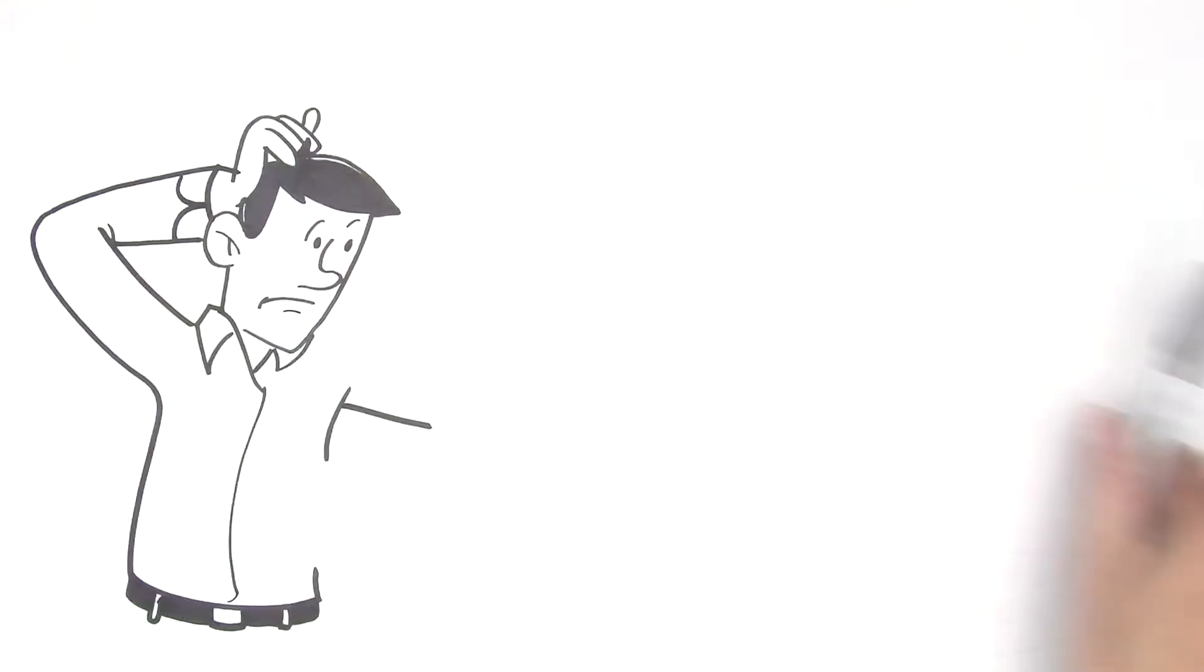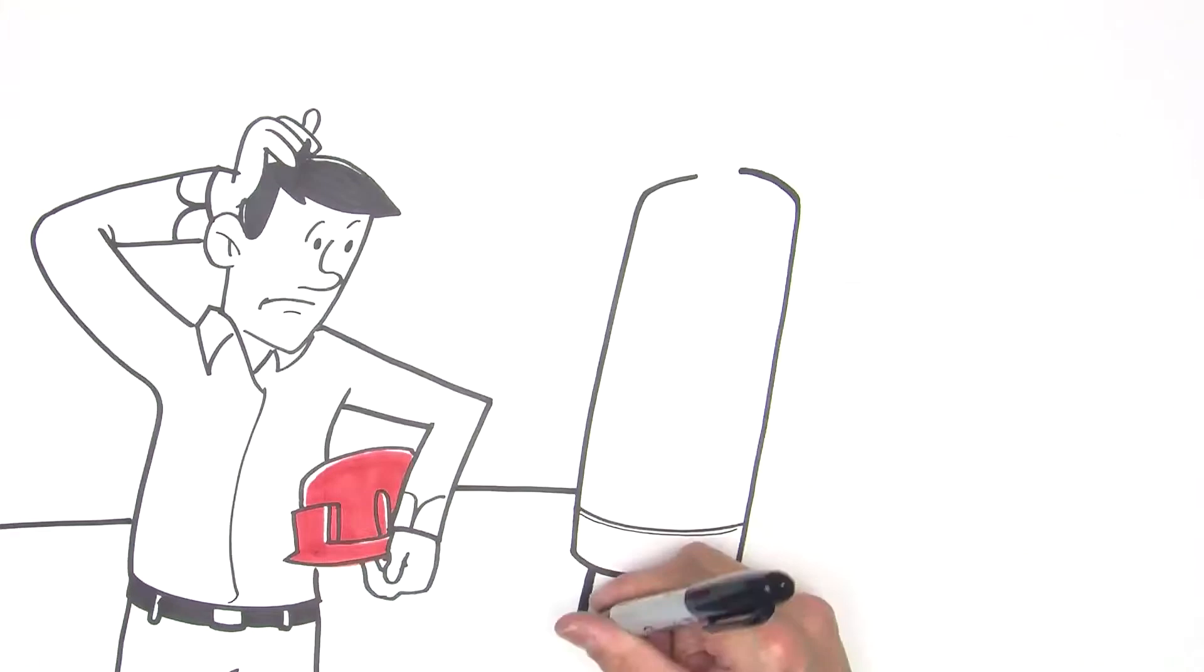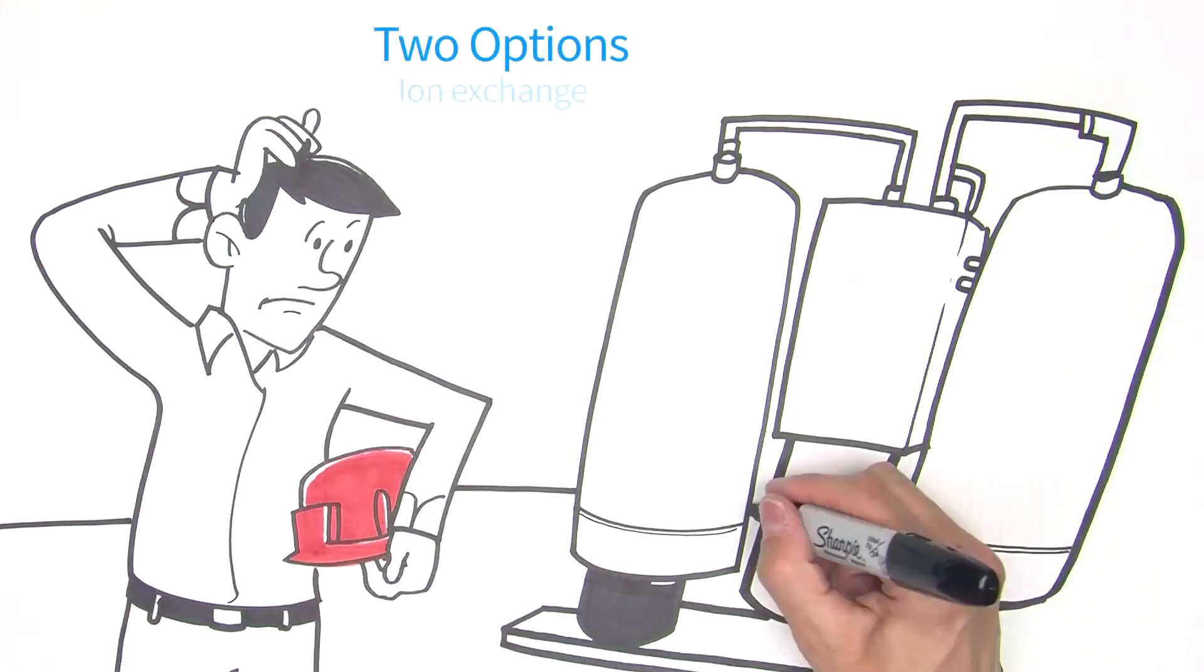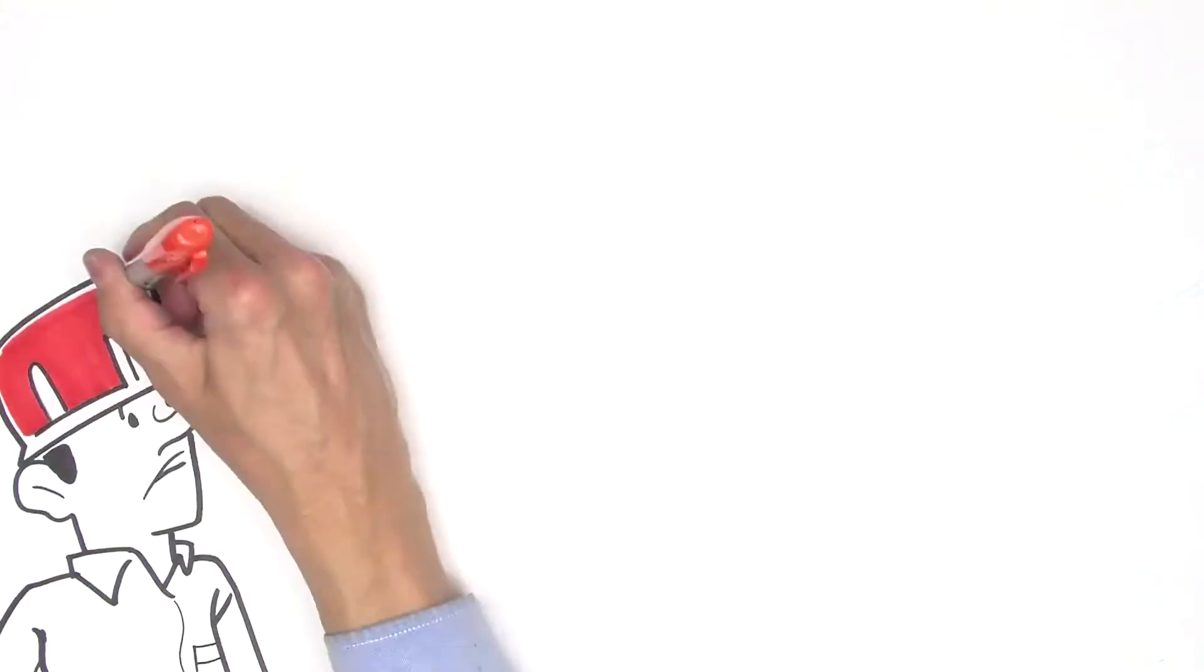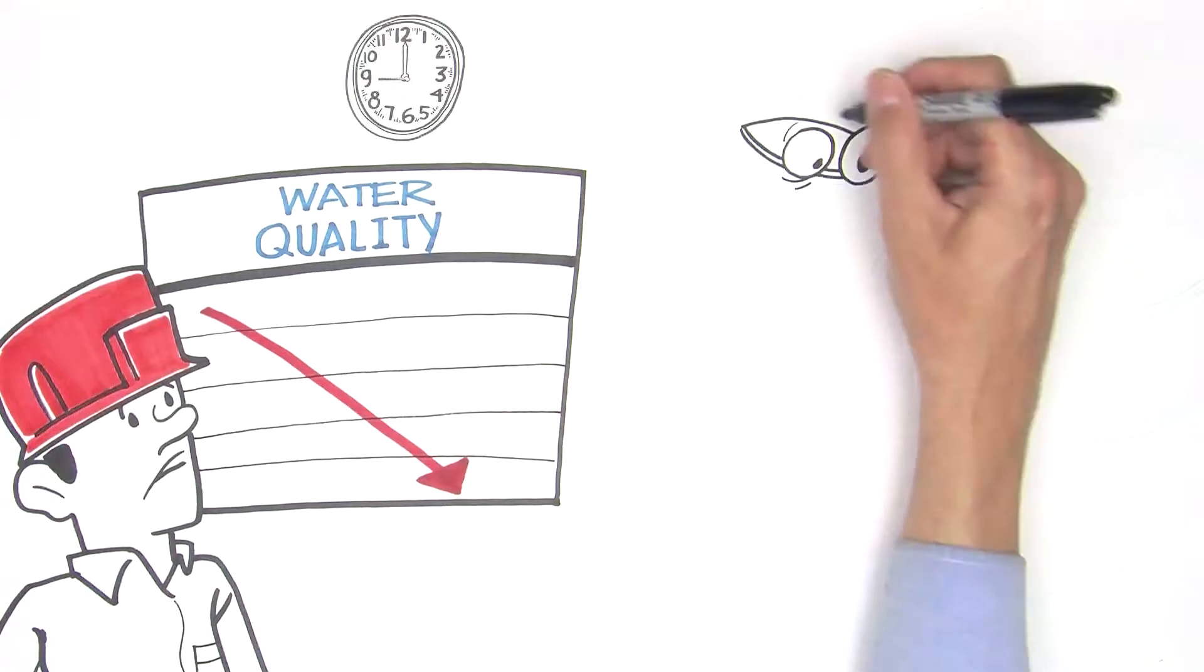To meet end users' requirements for high purity deionized water, there are only two options: ion exchange or continuous electrode deionization, CEDI for short. While ion exchange will provide high purity water, it's a batch process.